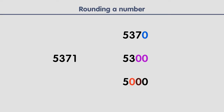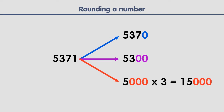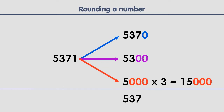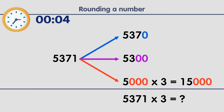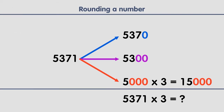Rounding makes a less precise version of the number but easier to work with. For example, to calculate five thousand times three, you only need a second — it's equal to fifteen thousand. But what about five thousand three hundred seventy-one times three? That takes more time to answer.